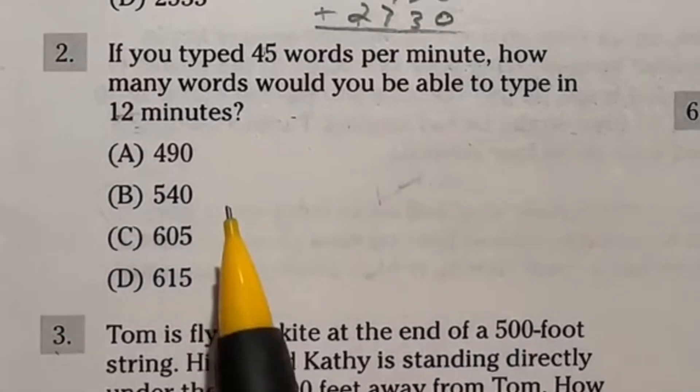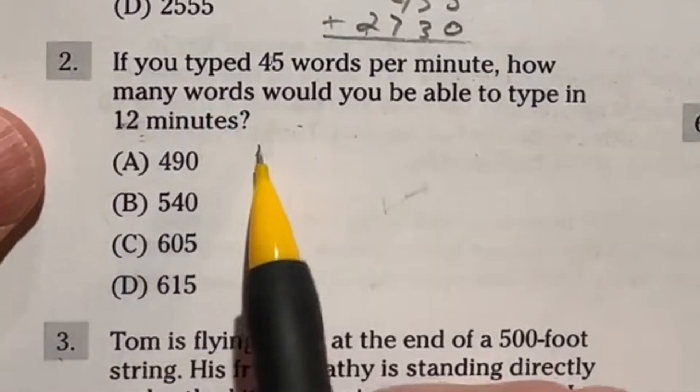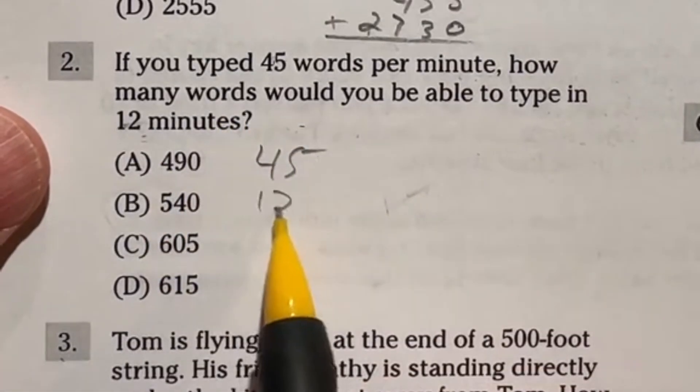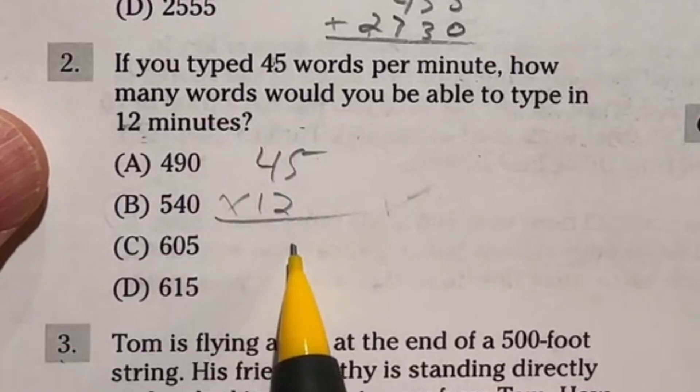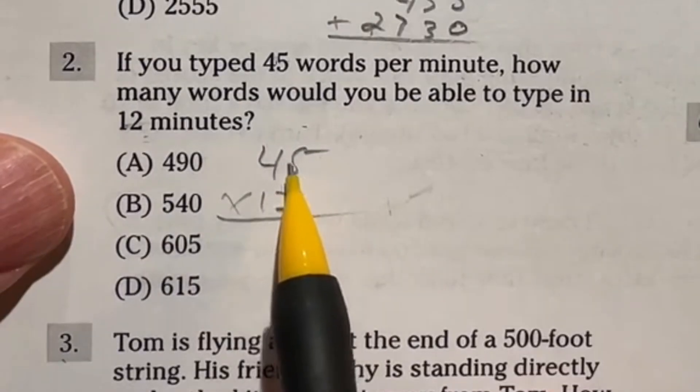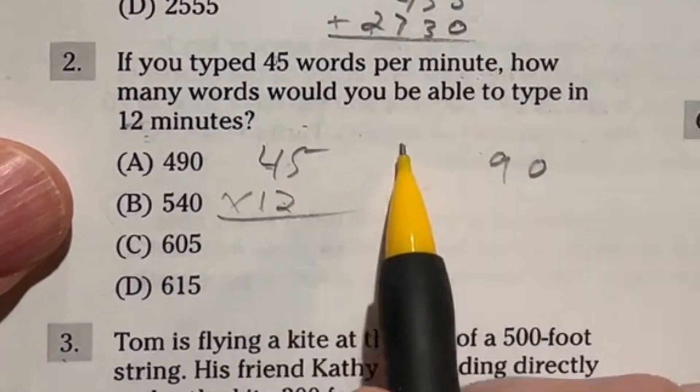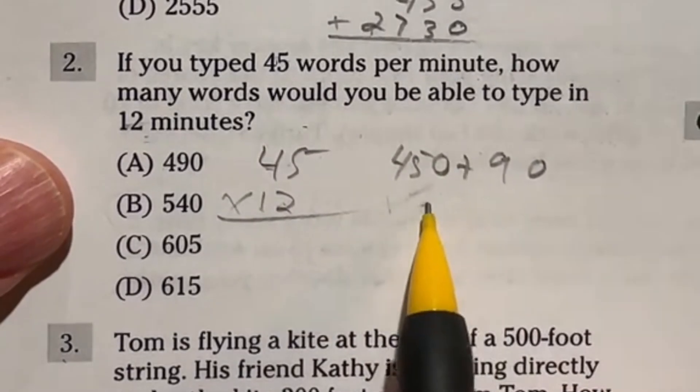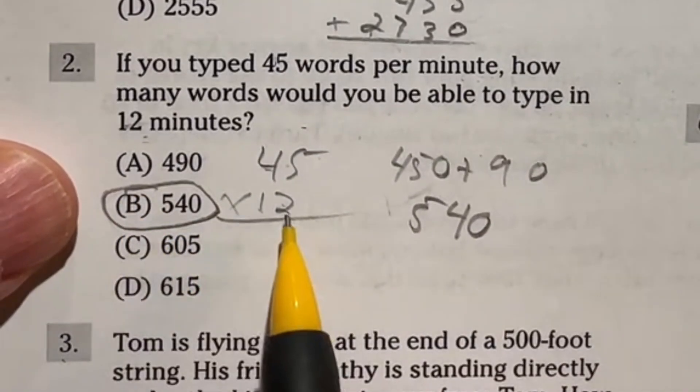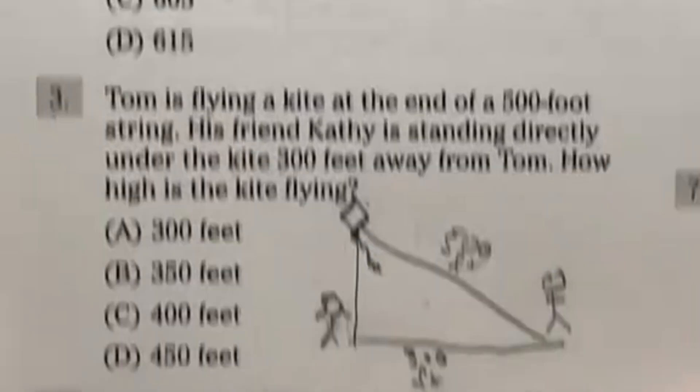Let's try two shortcuts. Two for one special here on the ASVAB. It says if you typed 45 words per minute, how many words would you be able to type in 12 minutes? Now you could multiply these together using the algorithm, get your answer. A little bit quicker way might have thought of it like this. 45 times two gives you 90 and 45 times 10 gives you 450. If I combine the two of those, it's going to give me 540, which is our answer B.